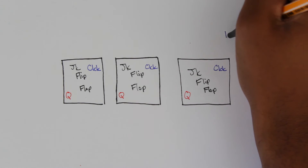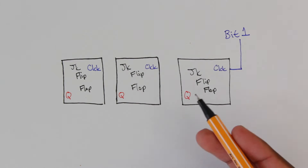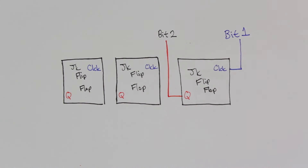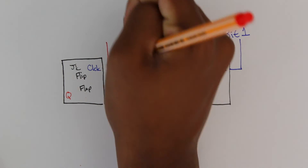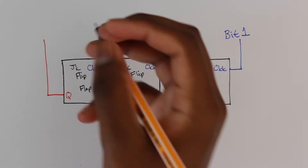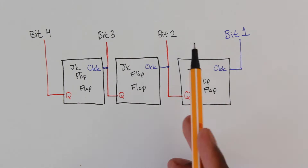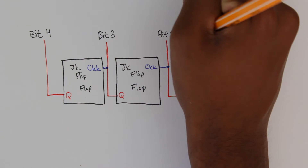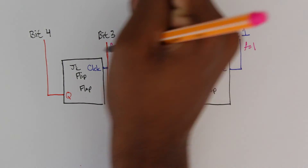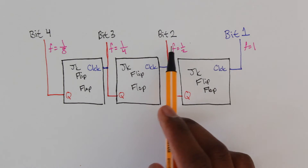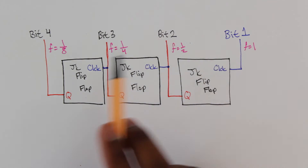In the proper diagram we have three JK flip-flops. Bit one is the clock input of the first flip-flop, and Q of the first equals bit two. Bit two is also the clock of the second JK flip-flop, whose output is bit three, which becomes the clock of flip-flop three, whose output is bit four. So bit one has frequency one, bit two one-half, bit three one-fourth, and bit four one-eighth.